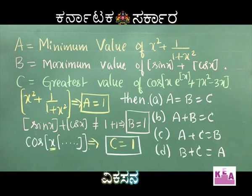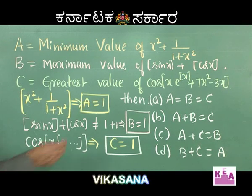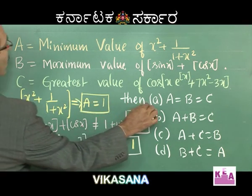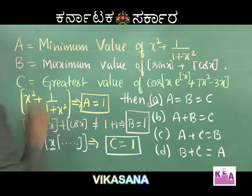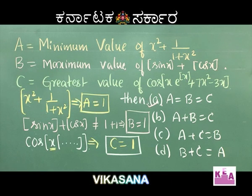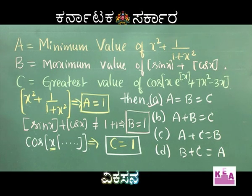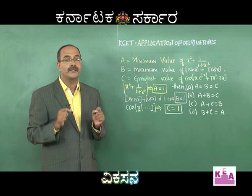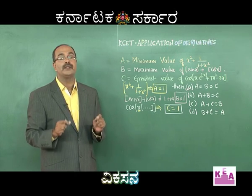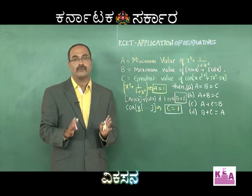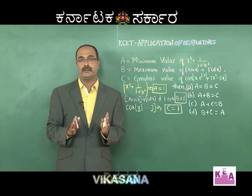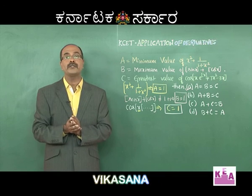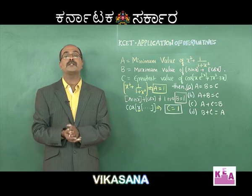The reason: cos function maximum value is 1, and at x = 0 the argument becomes 0. Therefore C = 1. We got A = 1, B = 1, C = 1. Therefore option A is correct. See how simple it is — an IIT-level problem solved using just basics of mathematics.